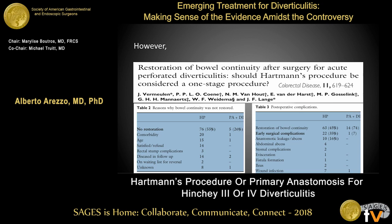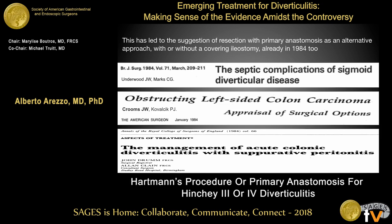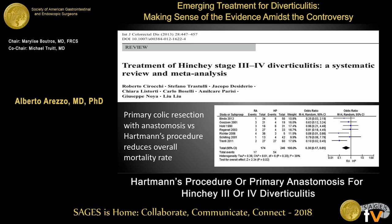We know that restoration of bowel continuity after Hartmann procedure is entailed by a very high rate of non-reversal and a very high rate of complications when reversal is attempted — about 60% and 30% respectively. This is why the suggestion of resection with primary anastomosis as an alternative approach, with or without a covering colostomy, was already made in 1984, the same year as the Krukowski paper.